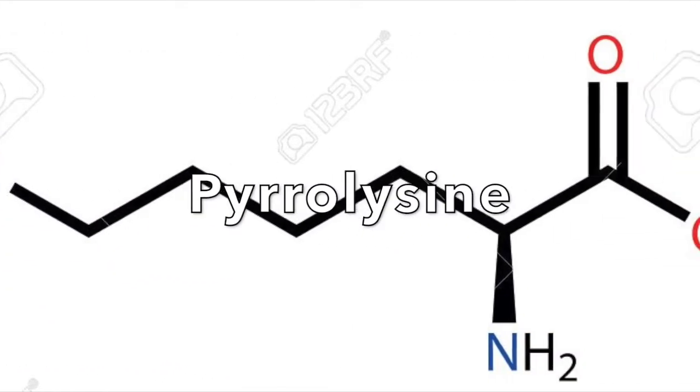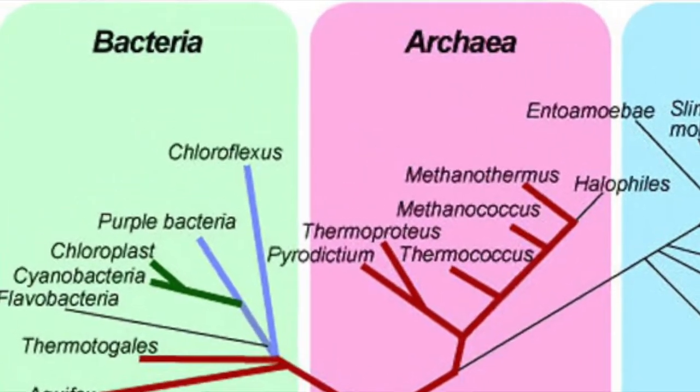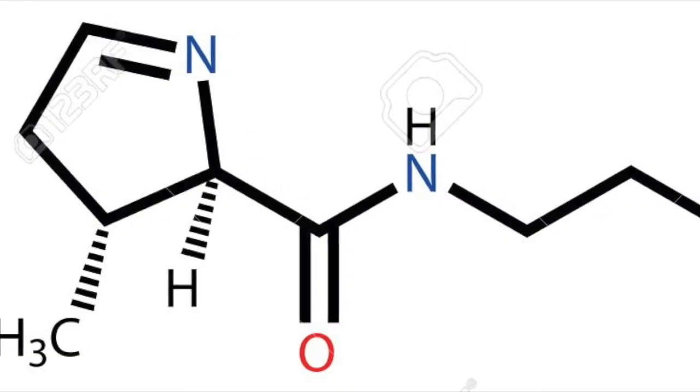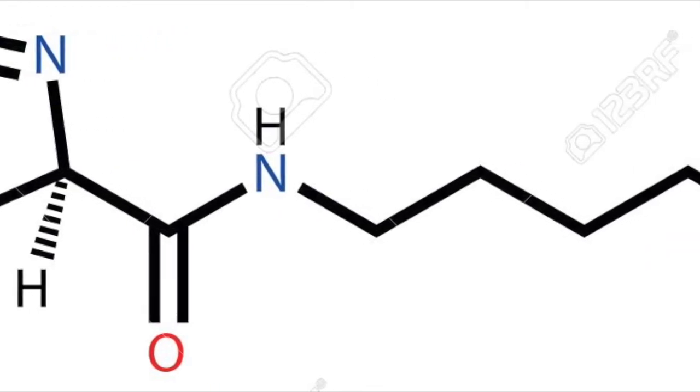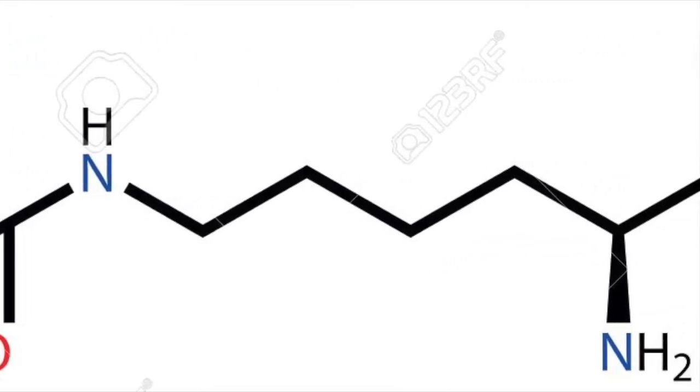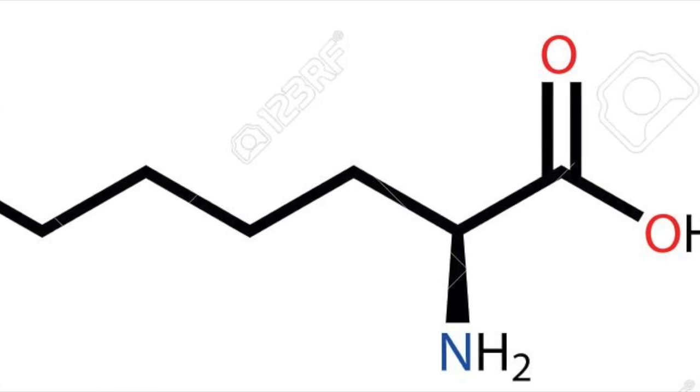Discovered in 2002, pyrrolysine is one synthesized and used only by members of archaea and eubacteria. Like selenocysteine, it is encoded by a stop codon, UAG, in methanogenic species of these two domains.